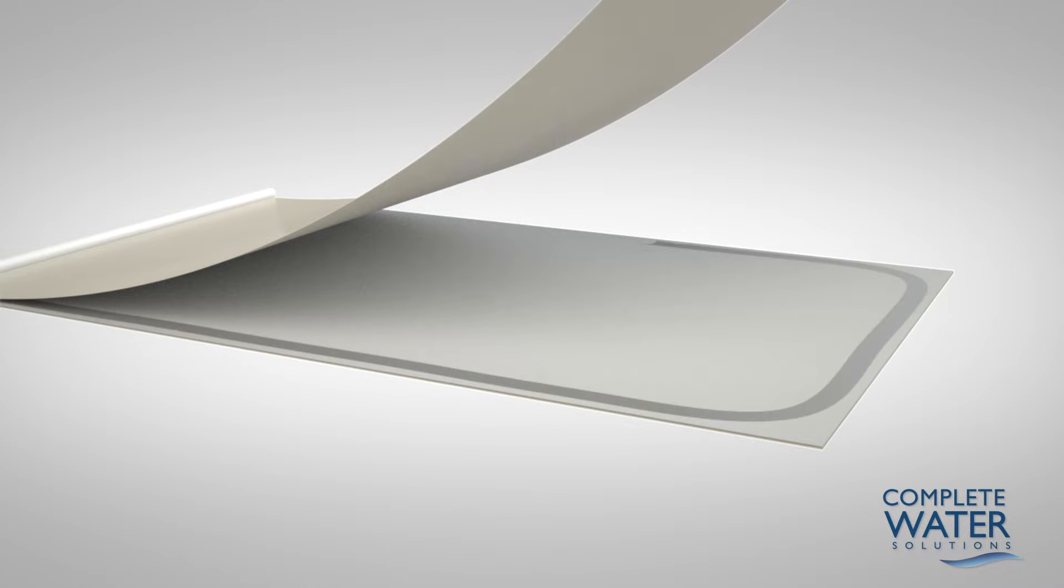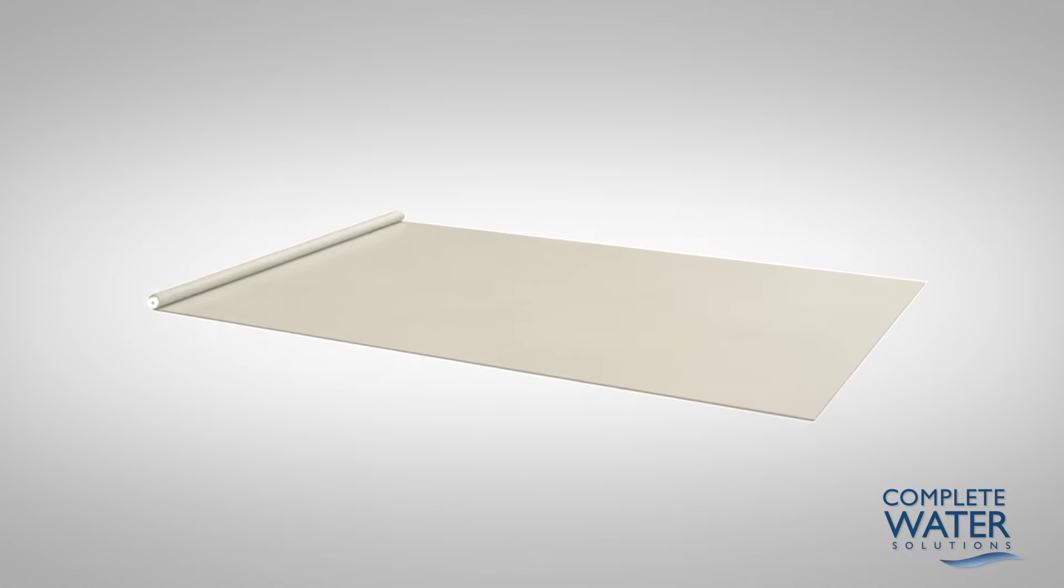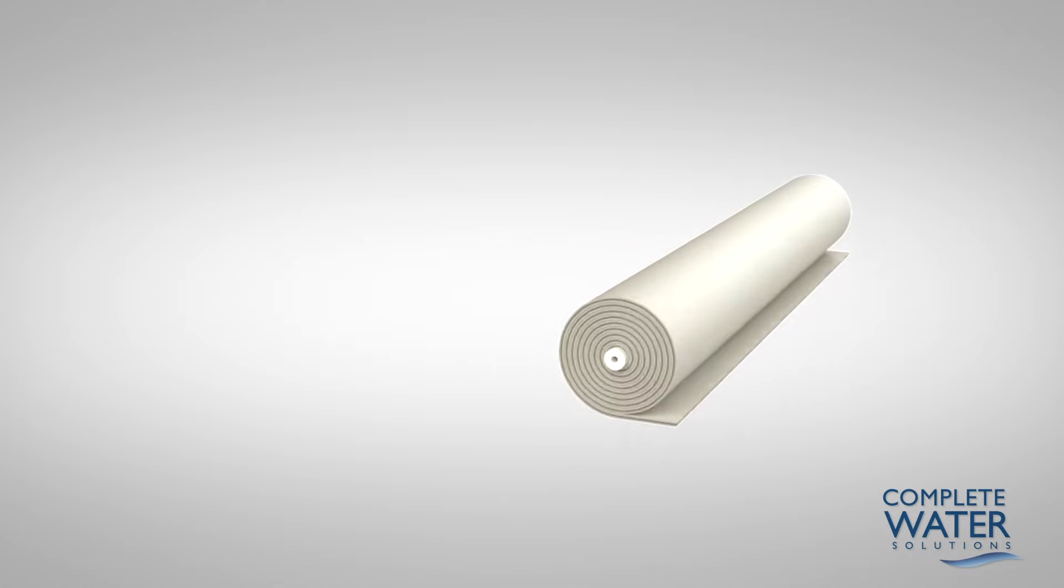The back of the membrane is glued along each of the three exposed sides and rolled around the core tube, also known as the permeate collection tube.